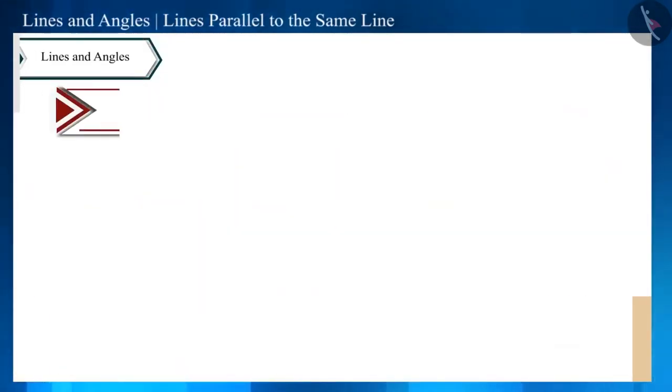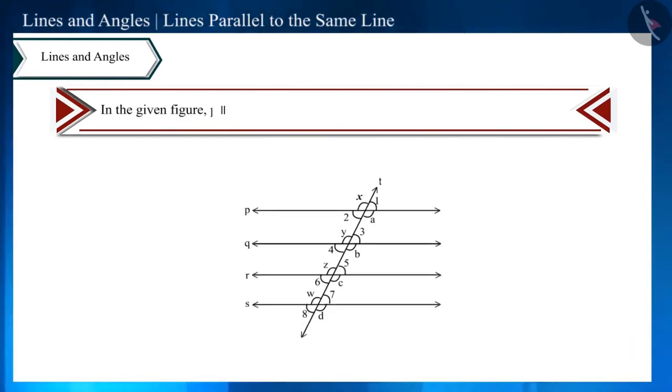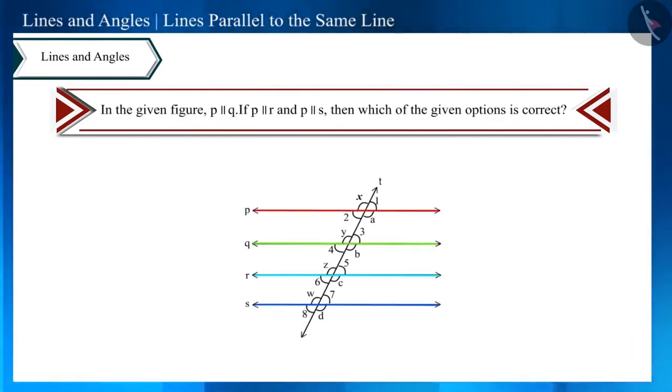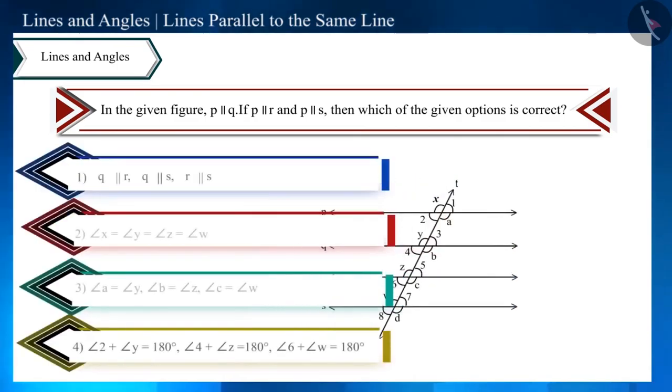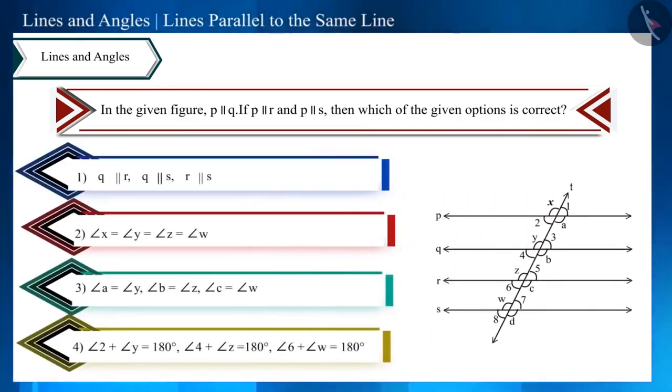Let's start with a question. In the given figure, line P is parallel to these three lines. Can you tell which of the below given options is correct?